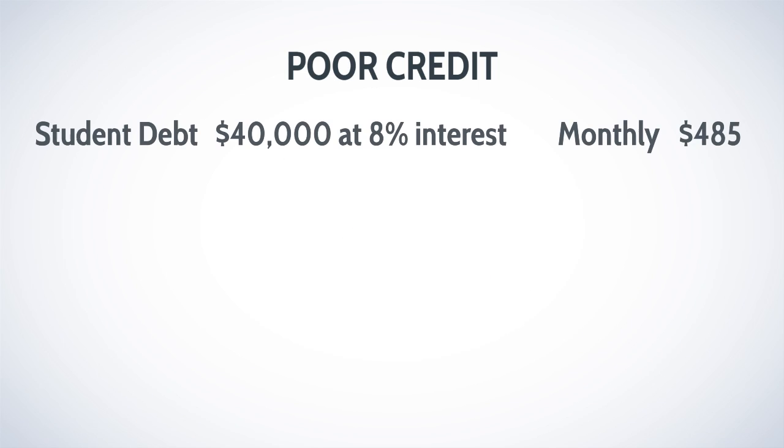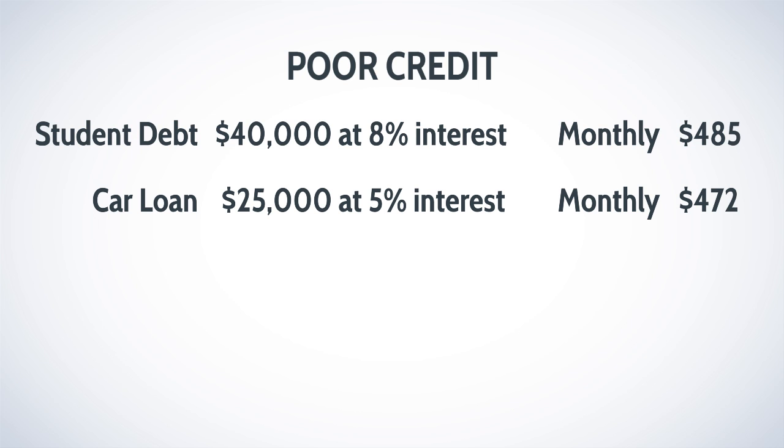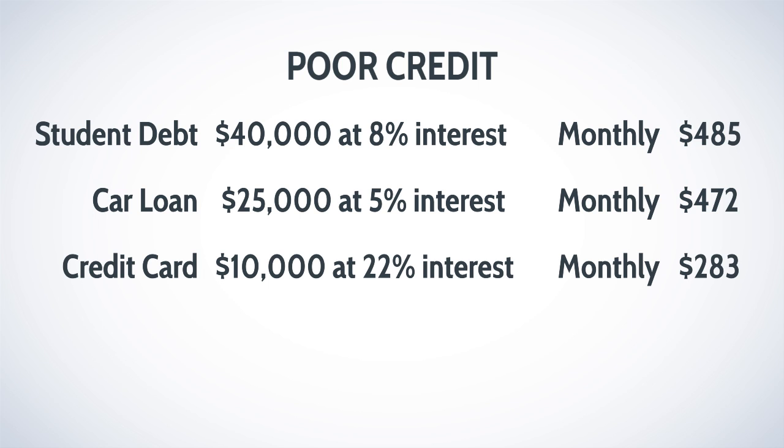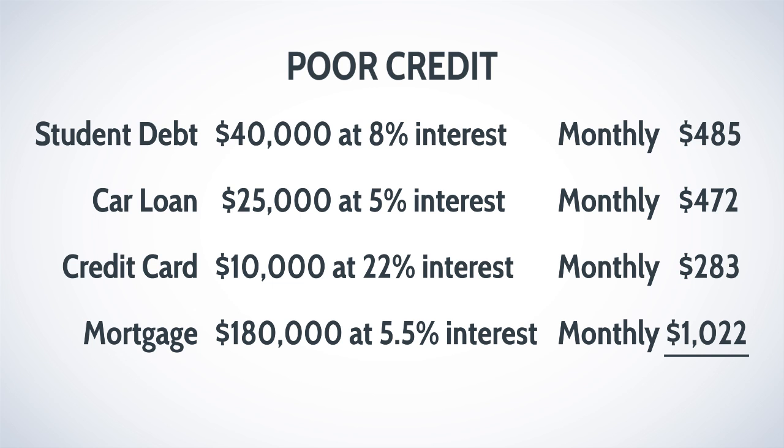Well, let's take somebody with good credit and poor credit. Poor credit first. They've got student debt of $40,000 at 8% interest and monthly they're paying $485. They have a car loan at $25,000 at 5% interest, $472 a month. Credit card balance of $10,000 at 22%, $283 a month. And finally, a mortgage, $180,000, 5.5%, $1,022, totaling $2,262.